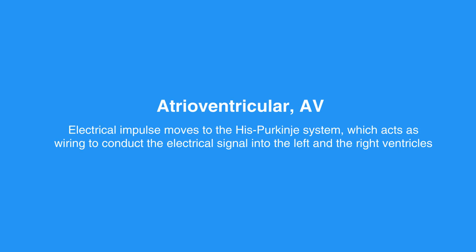The AV node lies between the atria and the ventricles. After pausing briefly, the electrical impulse moves to the His-Purkinje system, which acts as wiring to conduct the electrical signal into the left and the right ventricles. This electrical signal causes the heart muscle to contract and pump blood.